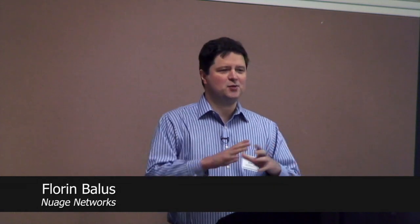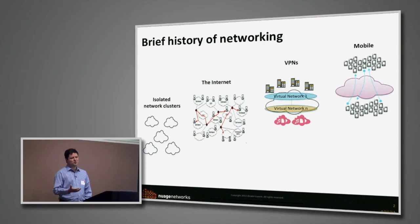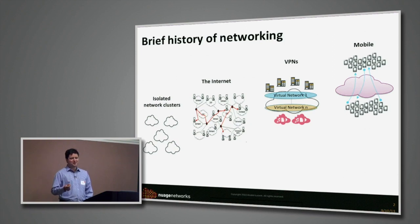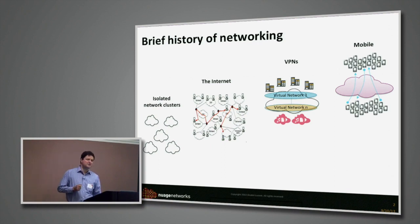We started basically with isolated networking clusters, and very fast we realized there is a need to interconnect them. So the internet was born, and then we got to VPNs. I want to talk about virtual private network technology a little bit, because I believe it's very similar with the network overlays, which are the hot subject in the cloud networking space these days. I also want to touch briefly on the mobile data space and the AWS trend, and then wrap it into how cloud networking could be affected by these experiences.